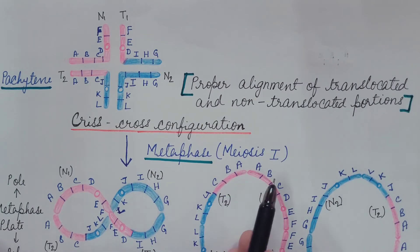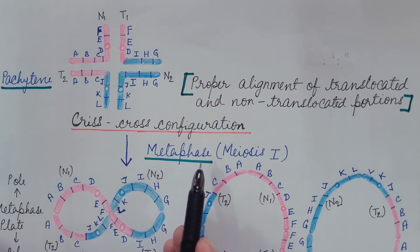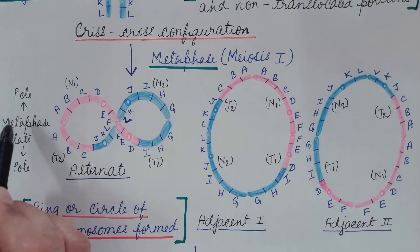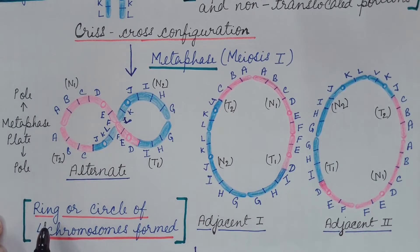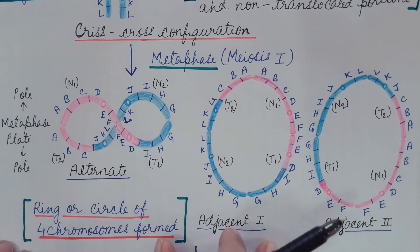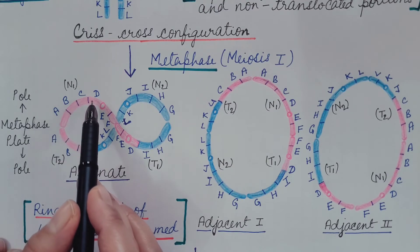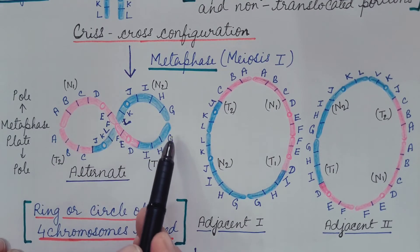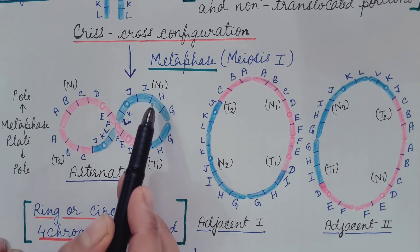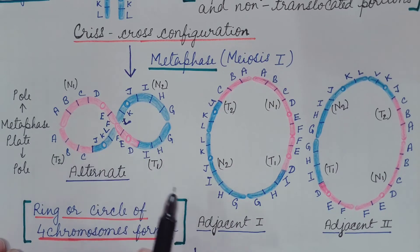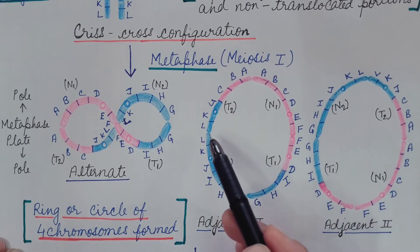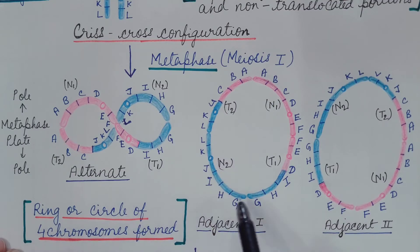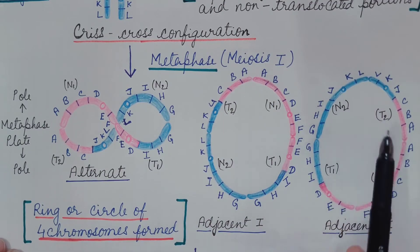During the metaphase stage, chromosomes align along the metaphase plate. The four chromosomes — N1, T1, N2, and T2 — form a ring or circle-like structure, which may be twisted or open. This is known as the alternate arrangement. When they form the open ring-like structure, two arrangements arise: adjacent one (N1, T2, N2, T1) and adjacent two (T2, N2, T1, N1).